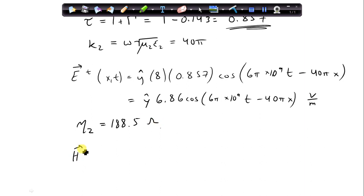The magnetic field transmitted changes with X and T and it's going to be pointing in the same direction as the incident magnetic field, so that's C-hat.